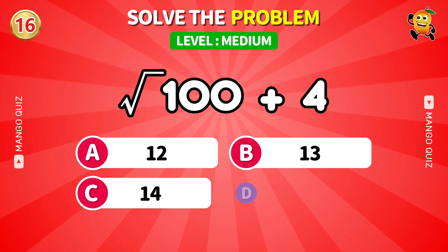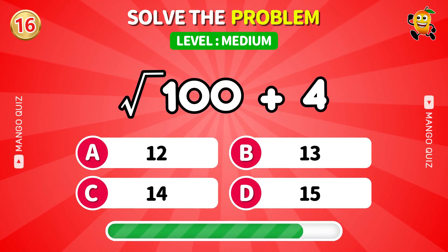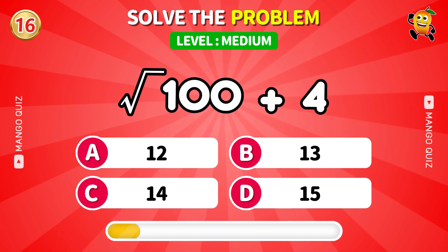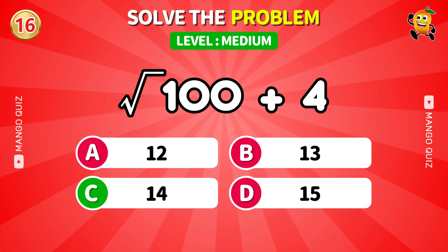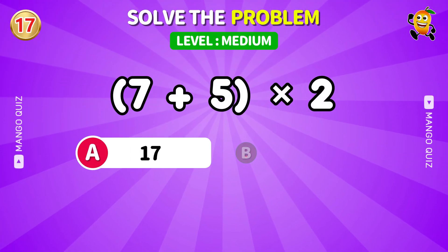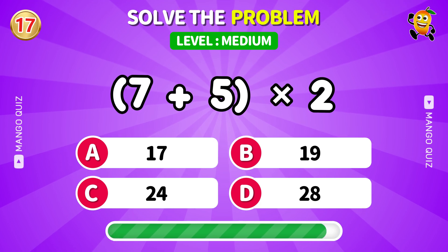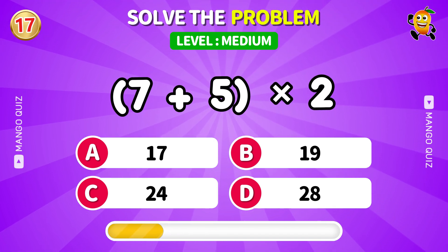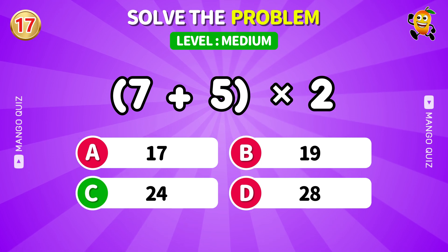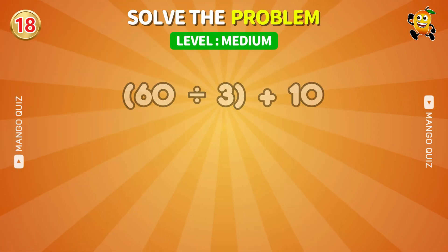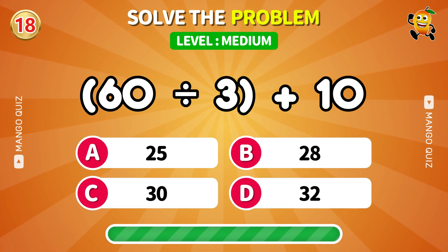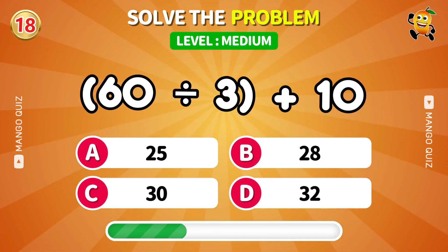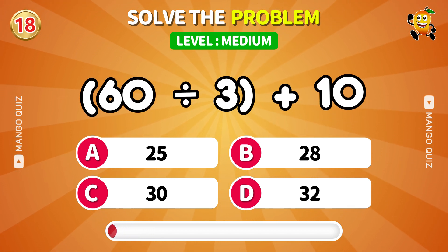Square root of 100 plus 4. Answer: 14. Next: add 7 and 5 then double it. Answer: 24. Next: 60 divided by 3 plus 10. Answer: 30.